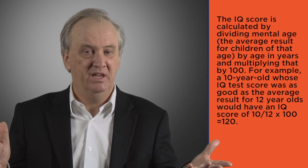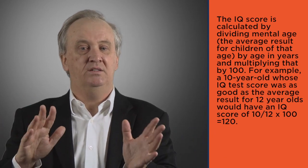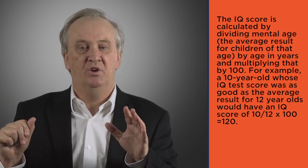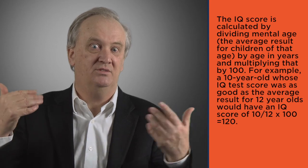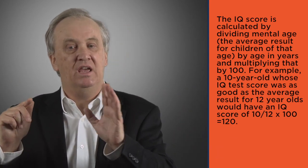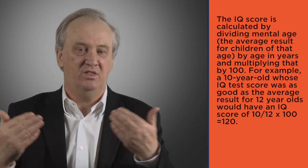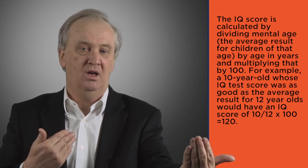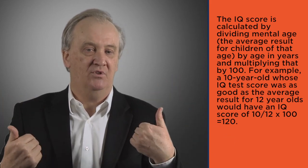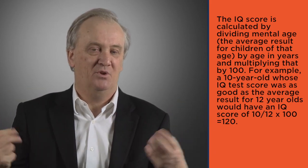What's IQ? What does the number mean, where does the number come from? The IQ score is a calculation based on dividing the mental age — which is the average result that children would get at that particular age — by the age in years of the person taking the test, and multiplying that by a hundred. So it really tells you whether you're ahead of the average or behind the average for that age level, and a hundred is the average. That's basically how IQ tests work.